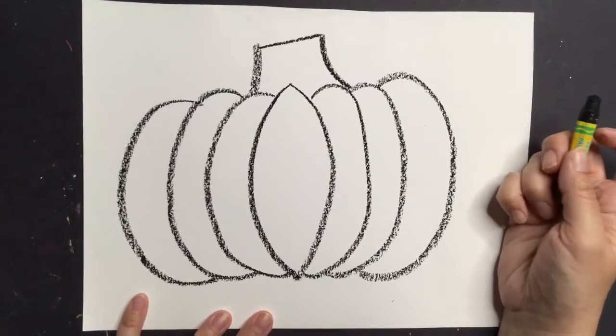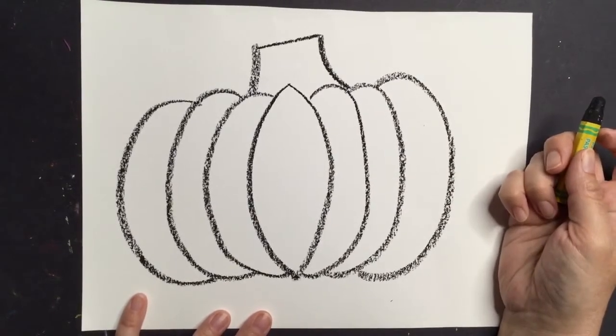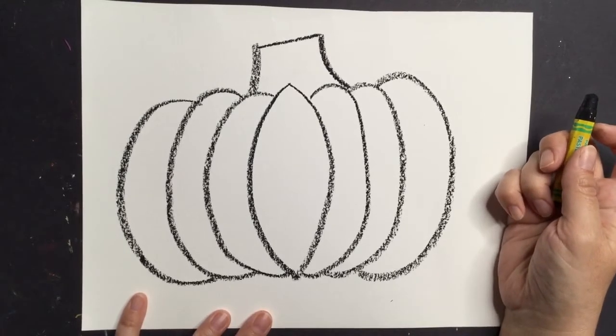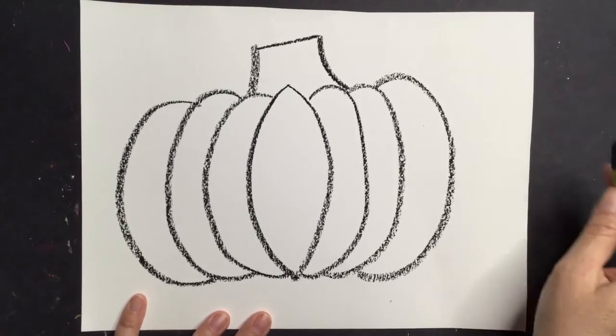Then you can decorate the pumpkin with dots, just like Yayoi Kusama. You can make the dots all one color, or you can choose lots of different colors. You can make them big or small. You decide.